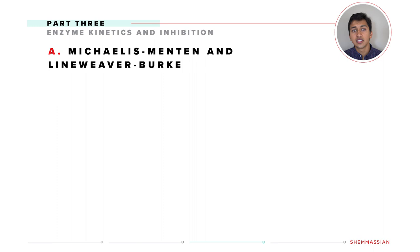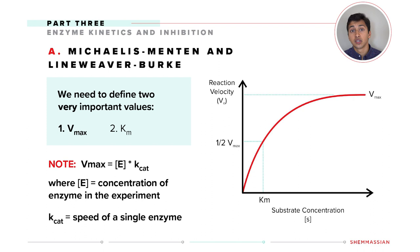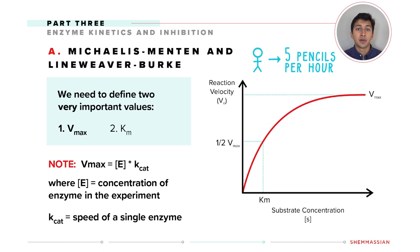Vmax is the fastest speed at which the enzymes can work. We can formalize that by multiplying the concentration of enzymes by the speed at which each enzyme works. For example, if you have pencil makers — your enzyme — who can make five pencils every hour, you'll simply figure out how many pencil makers you have and multiply them by five.